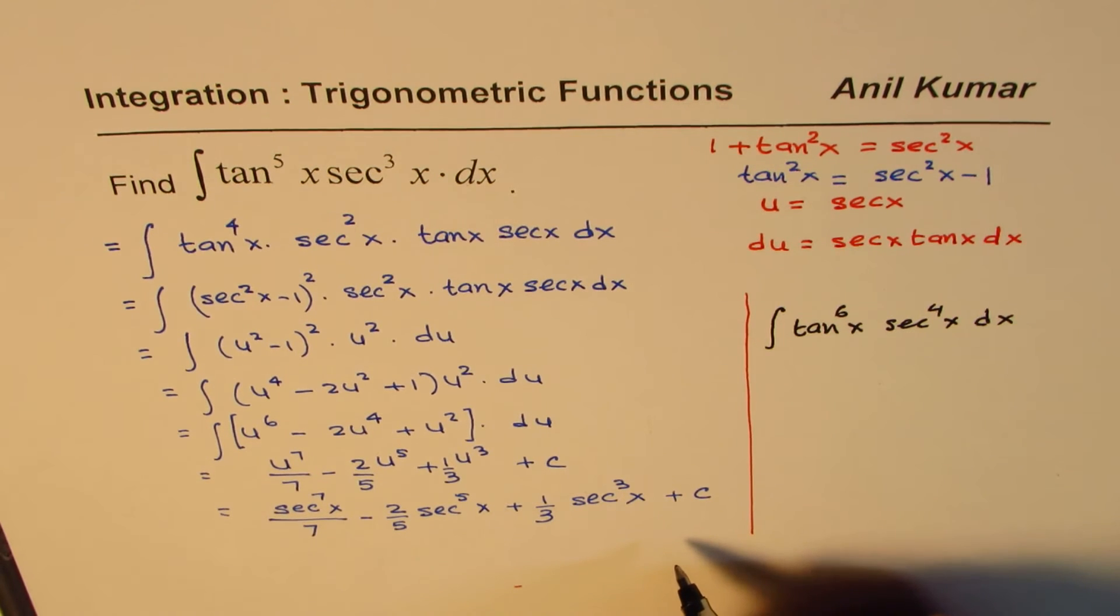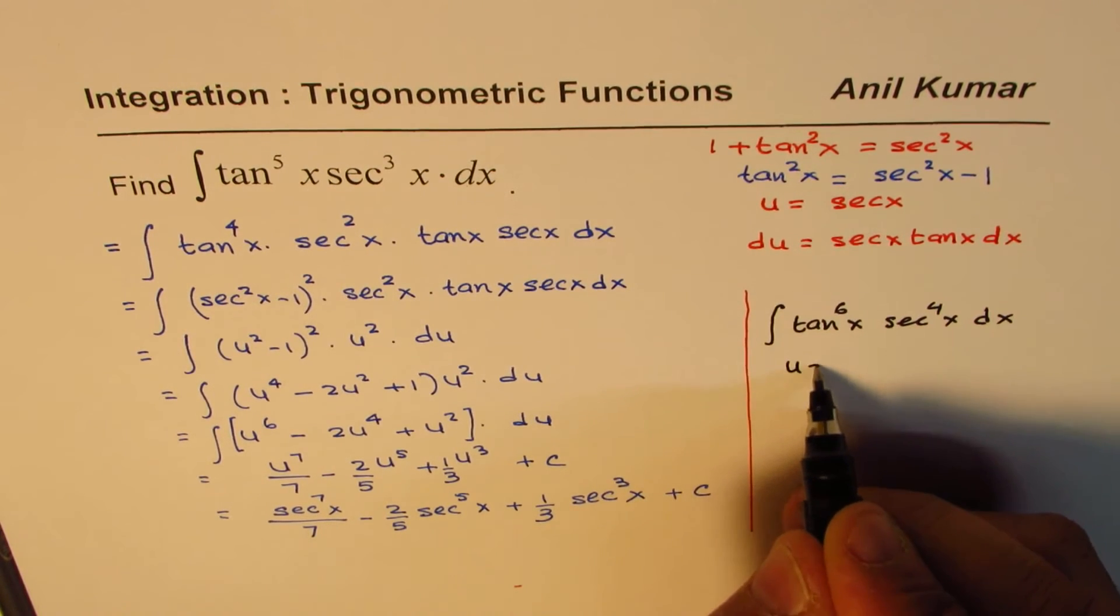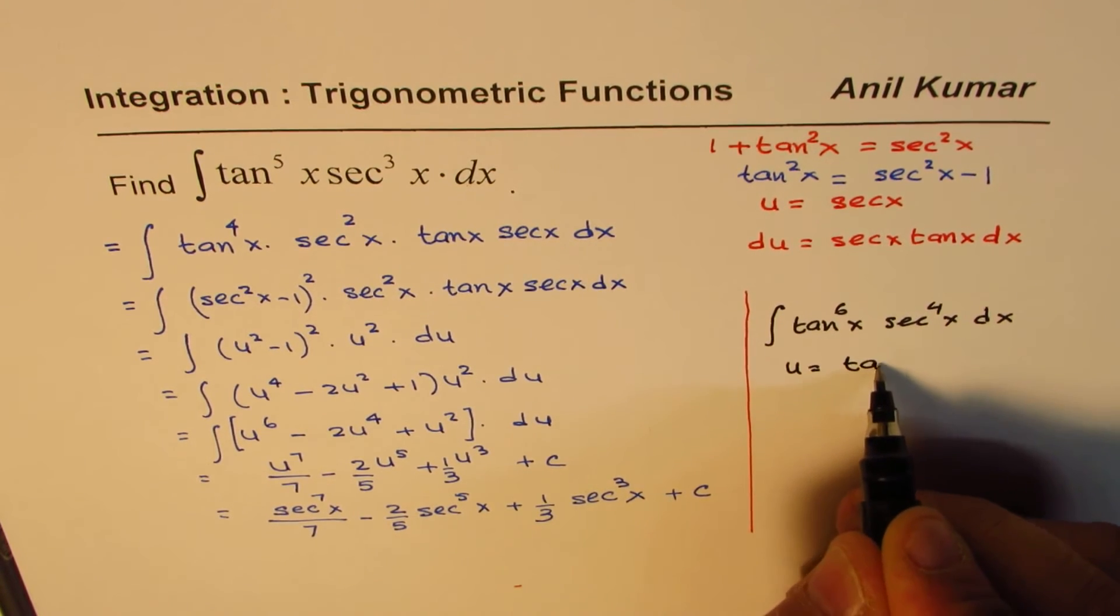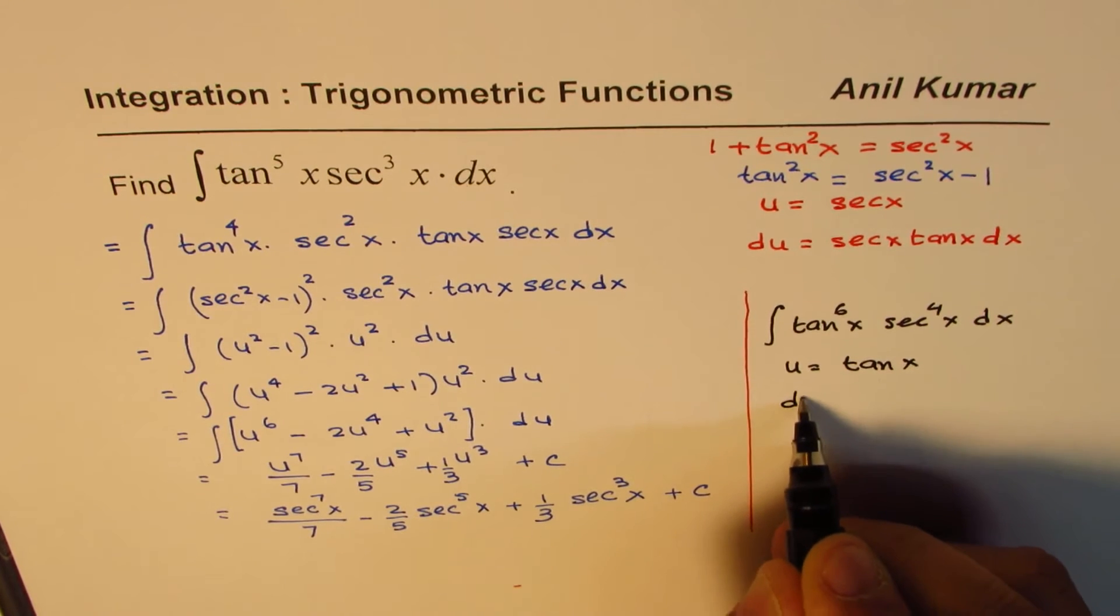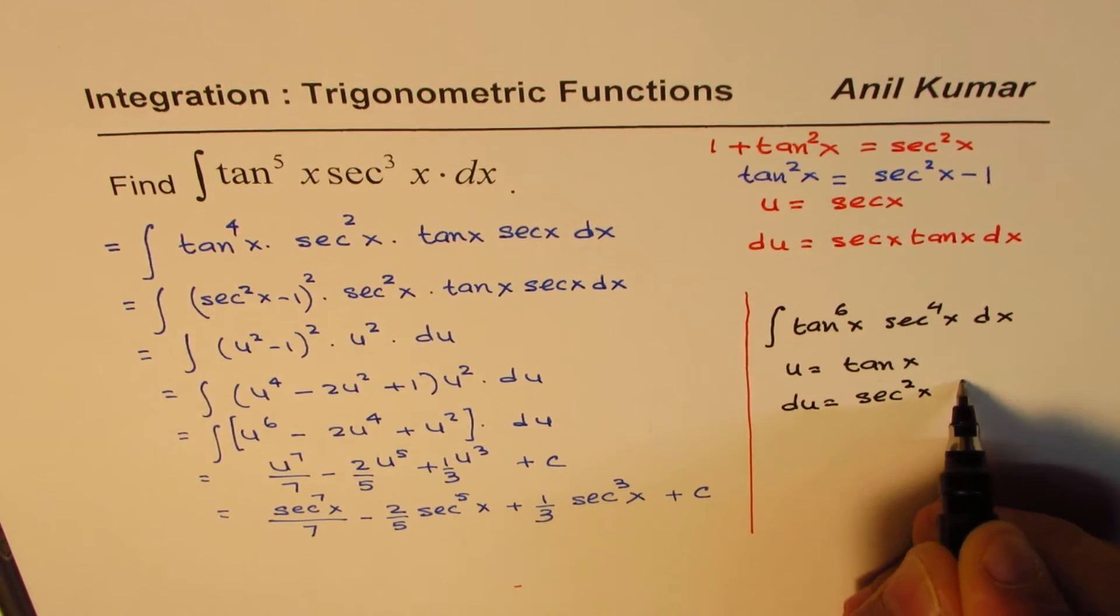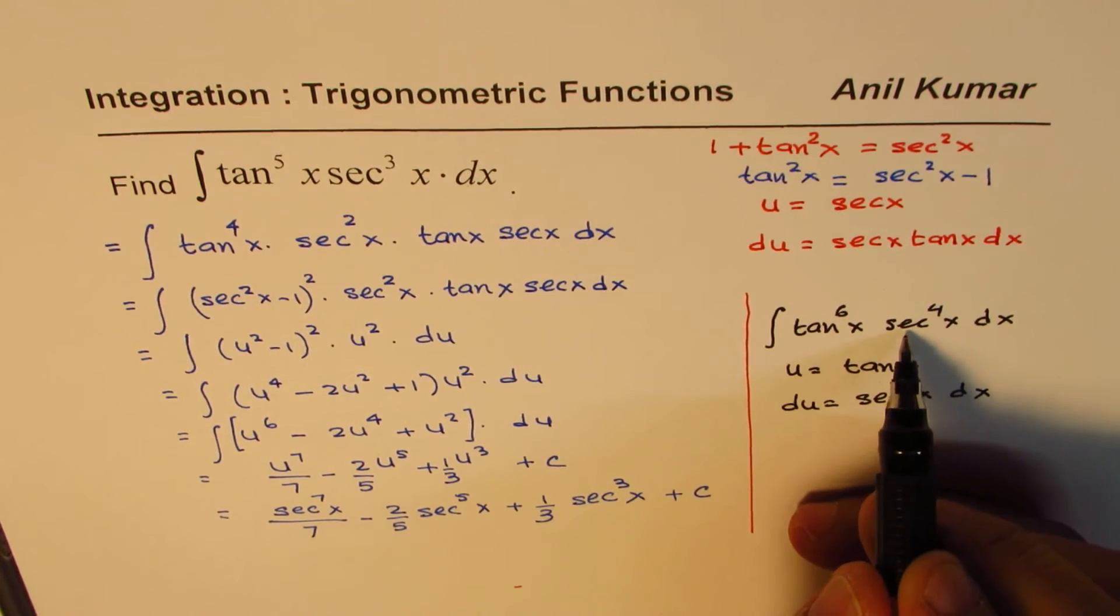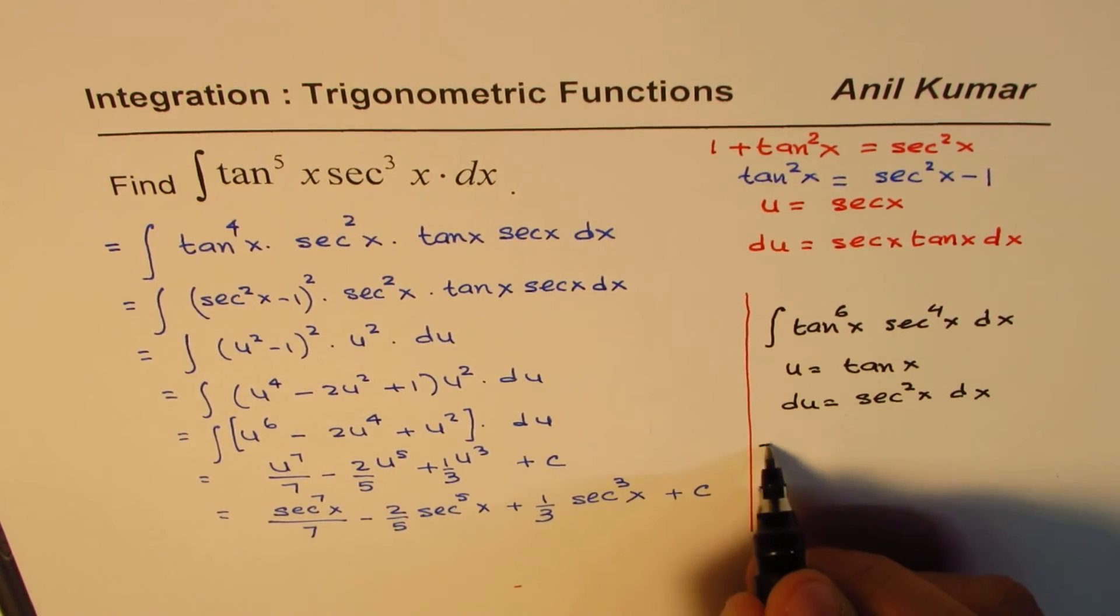Now again you know since they are already even now we can now substitute u equals to tan x. So du will be equals to secant square x dx.